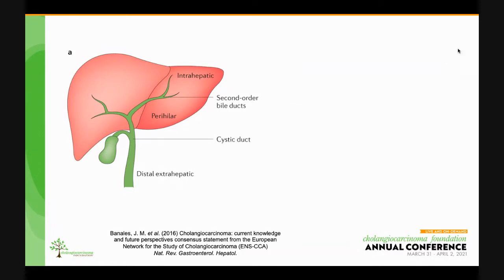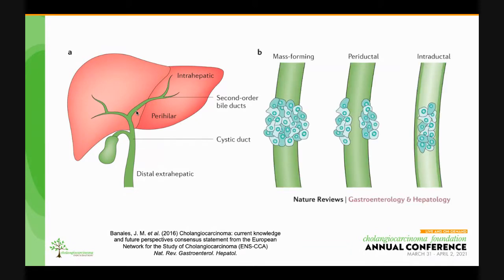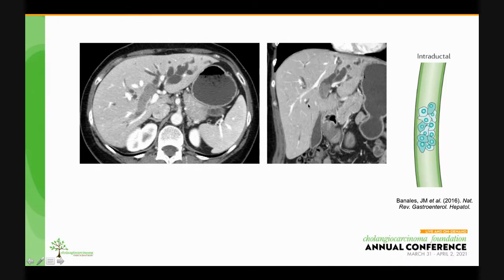Perihilar cholangiocarcinoma is a tumor involving the large bile ducts near the hilum of the liver — the common hepatic, right hepatic, or left hepatic duct. Unlike some other tumors, cholangiocarcinoma can have a variety of appearances. In the intraductal type, there is a papillary or polypoid mass within the duct, and the duct is distended at the site of the tumor. This causes biliary obstruction, as you can see by the dilated bile ducts upstream or more peripheral to the tumor. The wall of the bile duct at the site of the tumor is usually of normal thickness. The tumor is hypoenhancing relative to the liver and can look like a tumor thrombus, except it's in the bile duct rather than in a vein. This type is much less common than the other two types and also has a better prognosis.